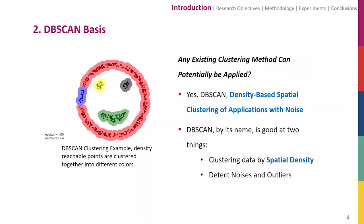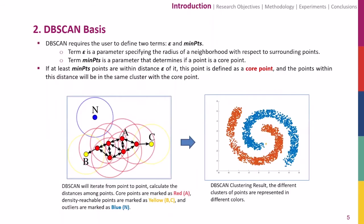Since the proposed clustering algorithm is closely related to DB-SCAN, I would like to briefly introduce DB-SCAN basics. DB-SCAN is one of the existing clustering methods that can potentially be applied to marine trajectory clustering. DB-SCAN is good at two things: clustering data by spatial density, and detecting outliers simultaneously. DB-SCAN requires two parameters input from the user: epsilon and min-points.